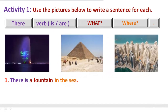Number 1: There is a fountain in the sea. It is a single fountain in the picture, so we start with 'there is' because it is a singular fountain. And where is it? In the sea. There is a fountain in the sea.